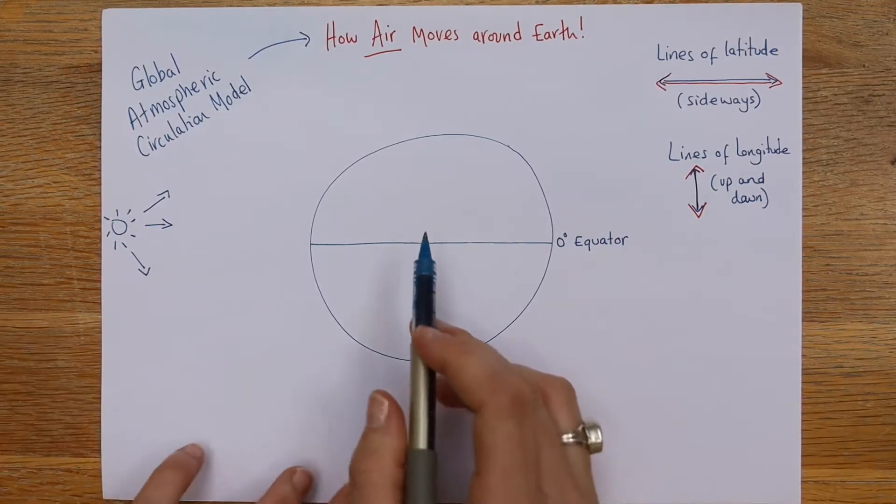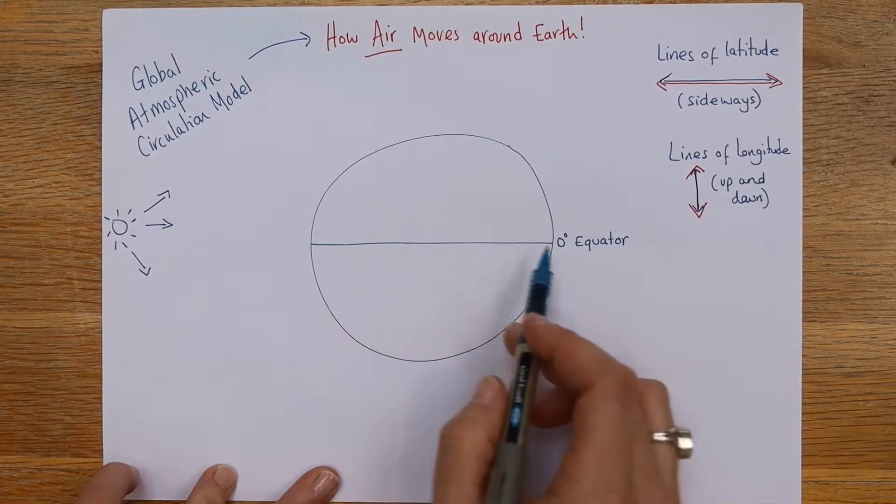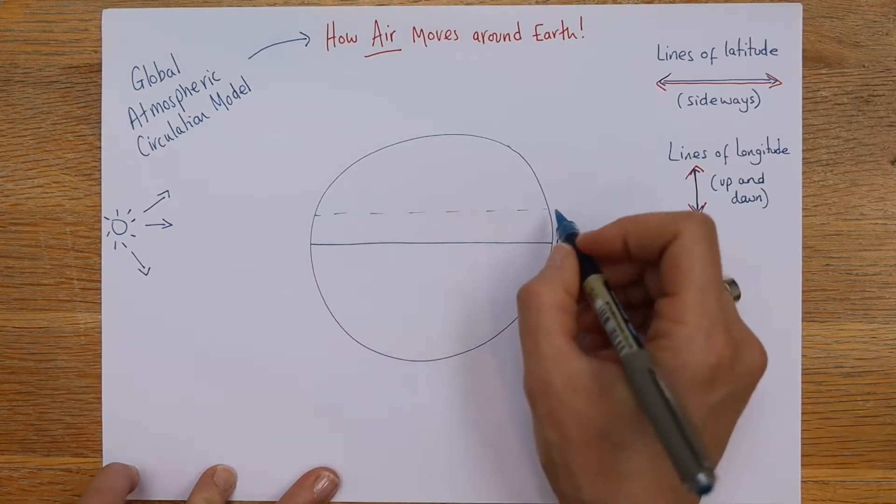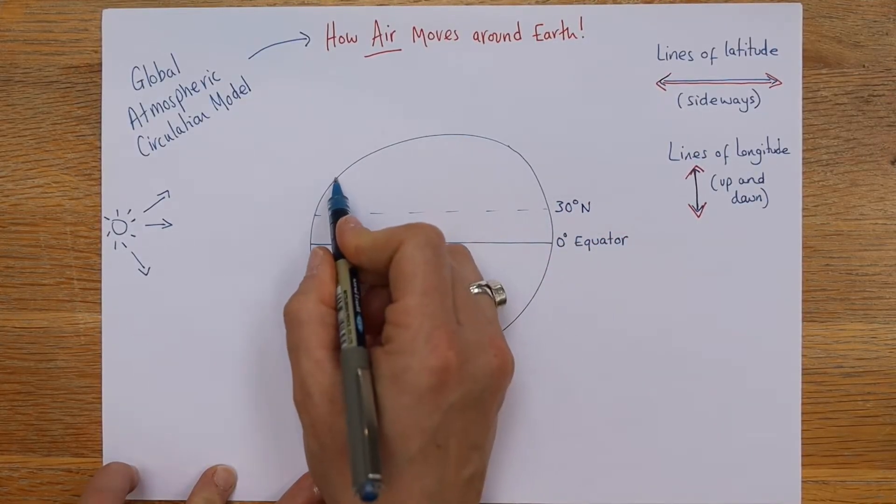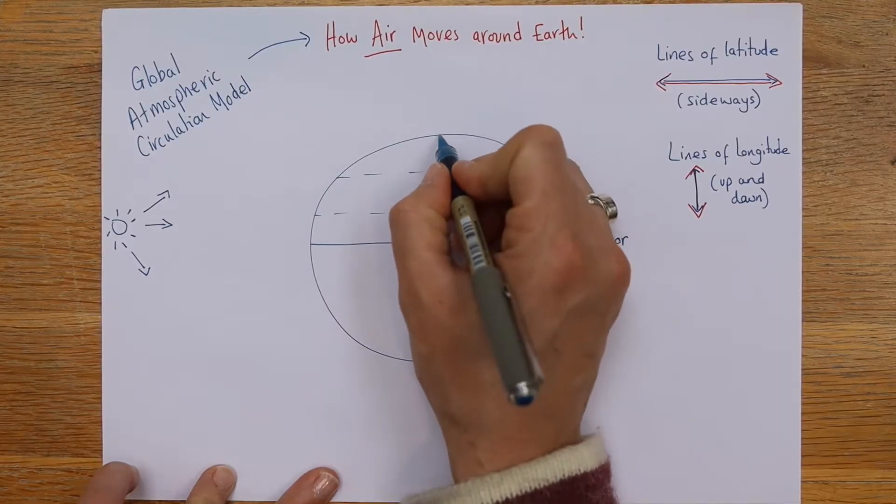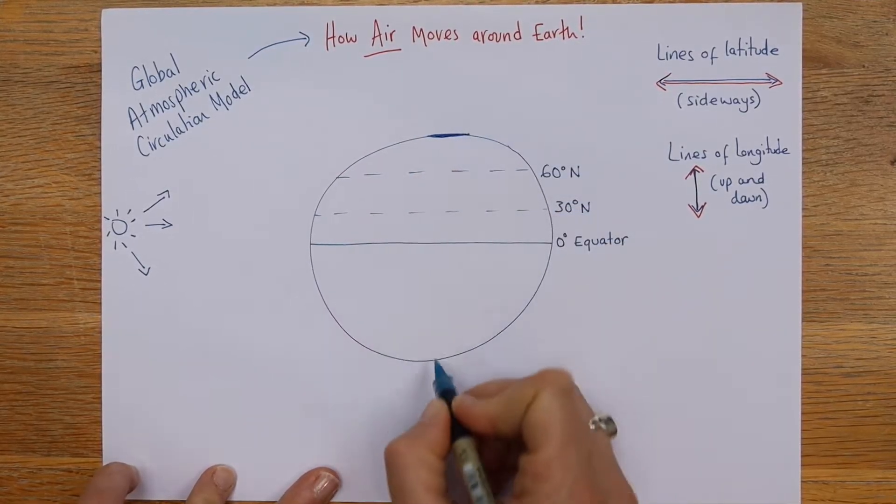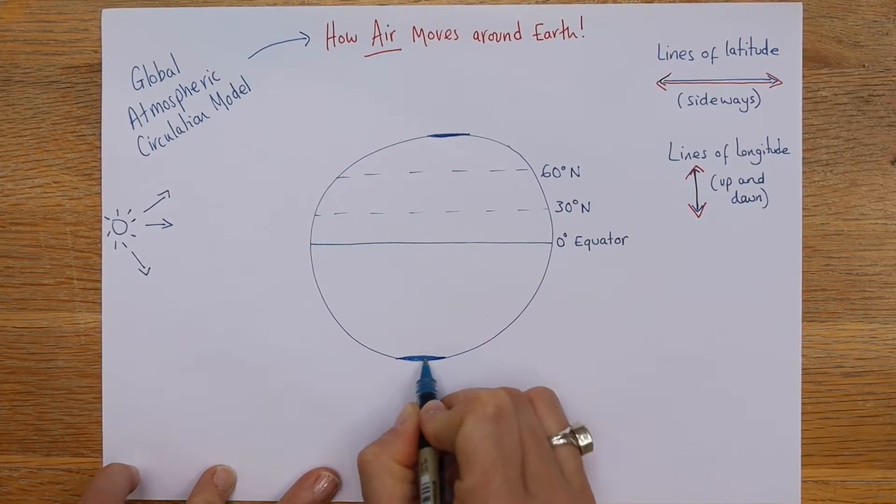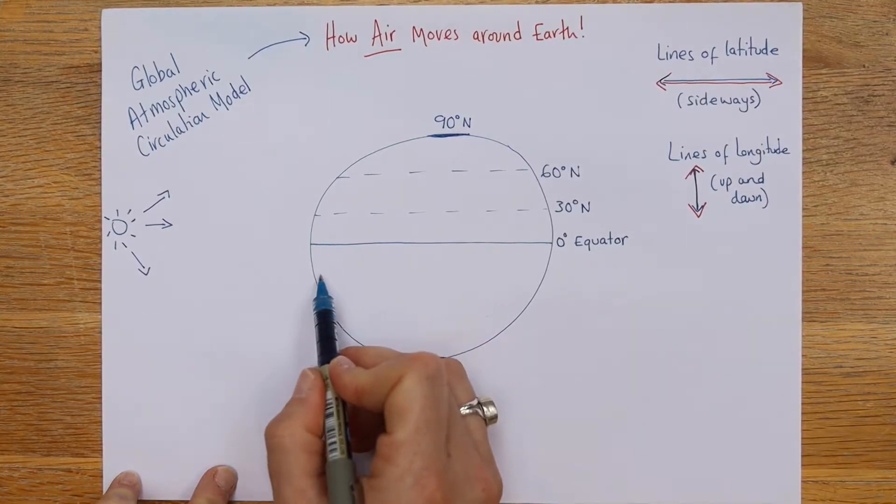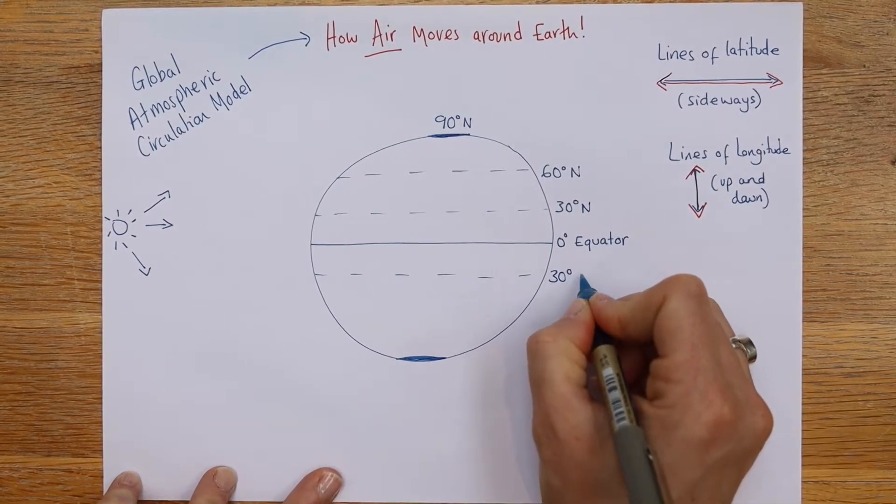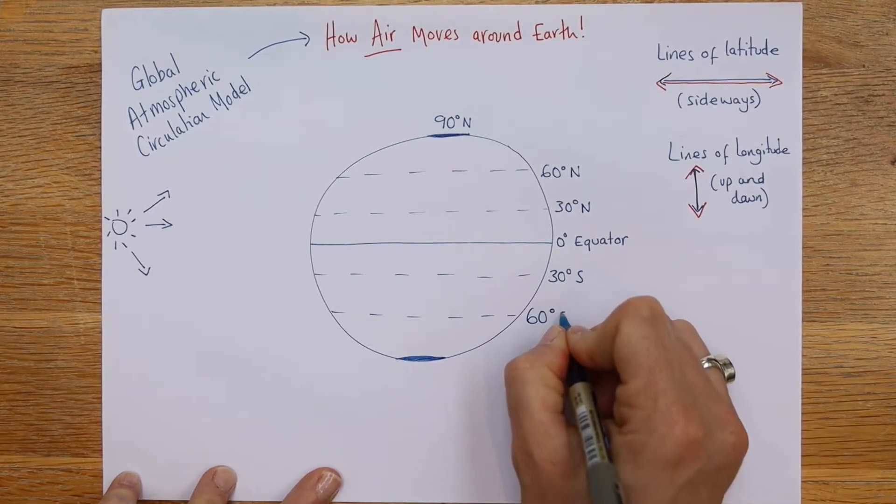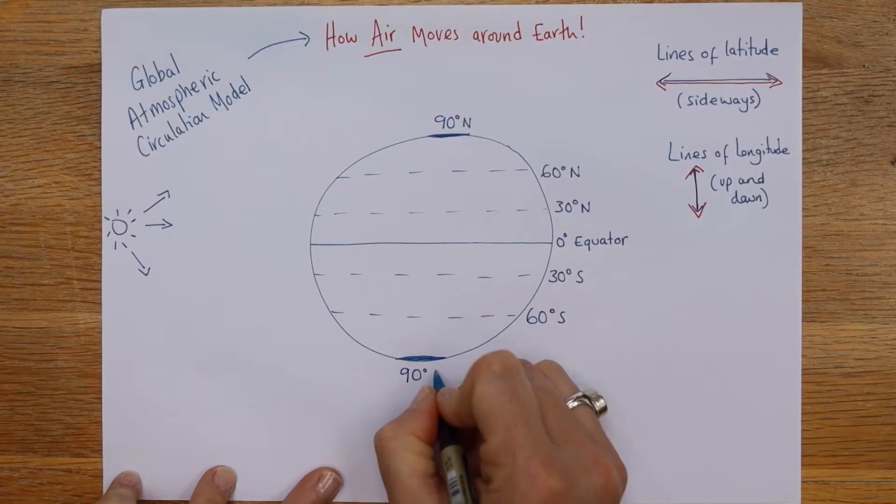Okay, we're going to add just some lines of latitude. So, if you watch me first, and then you do your own, we're at zero degrees for the equator. So, we've got to get in our 30 degrees north, and our 60 degrees north, which is where we are. And then, right at the top, and then right at the bottom, where Antarctica is, we've got our 90 degrees.